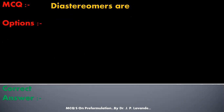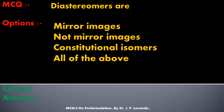Next multiple choice question: Diastereomers are — options: Mirror images, Not mirror images, Constitutional isomers, All of the above. Correct answer is Not mirror images. Diastereomers are not mirror images of each other.